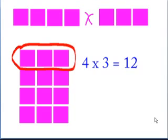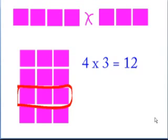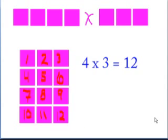Another example: here we have 4 times 3, and that equals 12. Graphically, here we have one group of 3, plus a second group of 3, plus an additional group of 3, plus a fourth group of 3. So 4 times 3 is equal to 12.